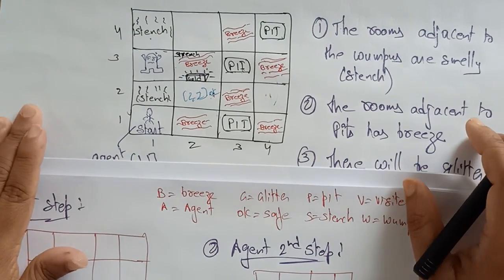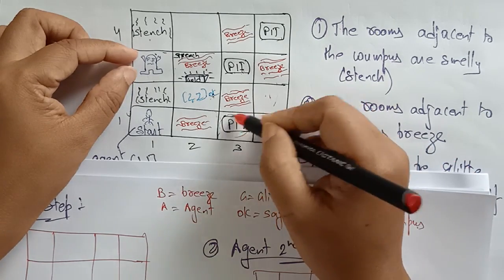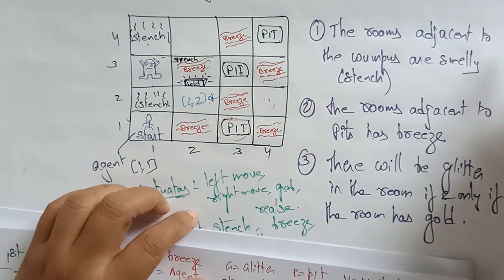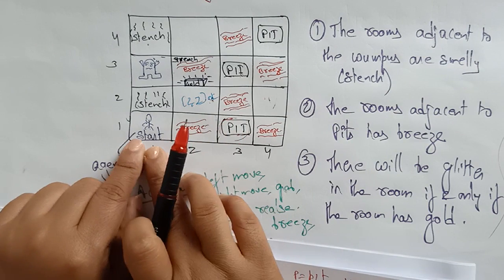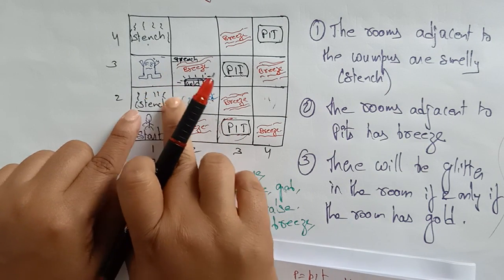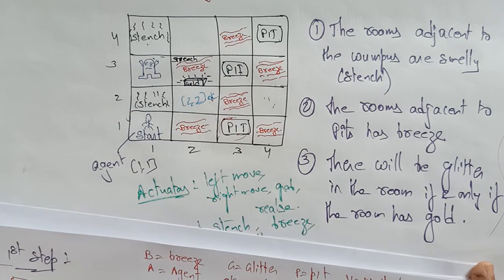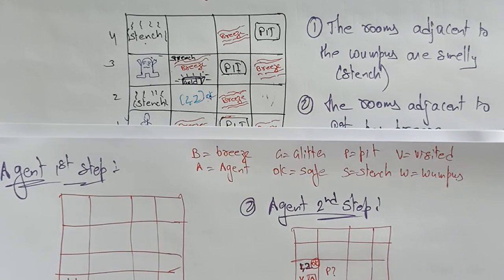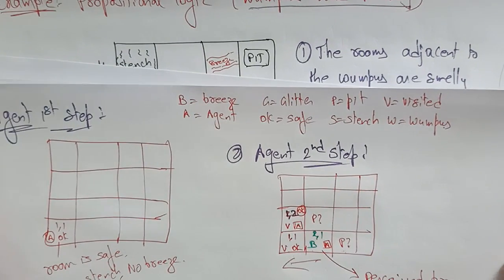This is how you can check which room is safe in the Wumpus world problem — without entering a pit or being caught by the Wumpus, you grab the gold and come out. Using these conditions you can check each room; if something is there, you come back and move to adjacent rooms only. In the next video I'll apply how propositional logic can be used to solve the Wumpus world problem. Thank you.